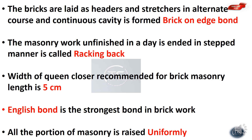The width of a queen closer recommended for brick masonry is 5 cm. English bond is the strongest bond in brickwork. All portions of masonry should be raised uniformly.